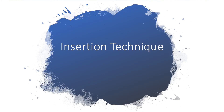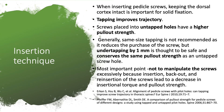Now let's analyze how insertion technique affects biomechanical stability. Keeping the dorsal cortex intact is an important method for solid fixation. Tapping before insertion improves screw trajectory; however, screws placed into untapped holes have higher pull-out strength, so surgeons often do away with tapping especially in osteoporotic bones. Same-size tapping is not recommended as it reduces screw purchase, but under-tapping by 1 mm is thought to be safe and conserves almost the same pull-out strength as an untapped screw hole.